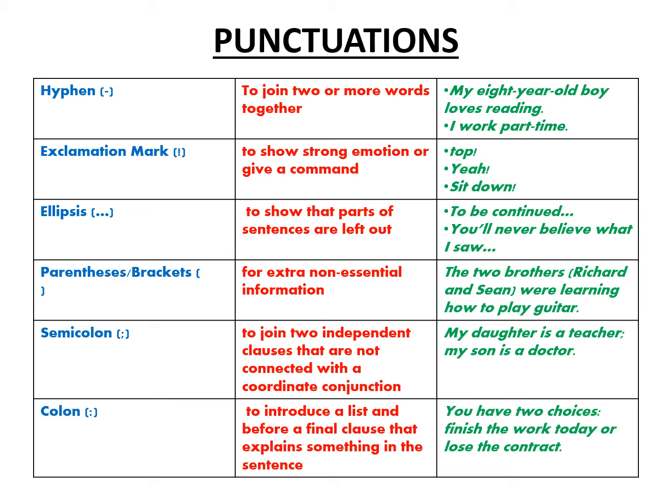Next is semicolons. Semicolons are used to join two independent clauses together. For example, 'My daughter is a teacher; my son is a doctor' — in between they have used a semicolon. Next are colons. Colons are used to introduce a list and before a final clause. For example, 'You have two choices:' — and then what are those two choices can be mentioned after the colon. I hope this is clear.